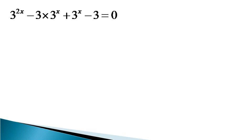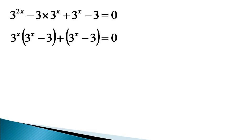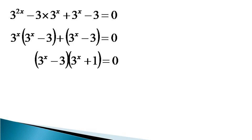We take 3 raised to the power x common from the first two terms to get 3 raised to the power x times the quantity 3 raised to the power x minus 3, plus 3 raised to the power x minus 3. Then we take 3 raised to the power x minus 3 common from the whole equation to get 3 raised to the power x minus 3, times 3 raised to the power x plus 1, equals 0.